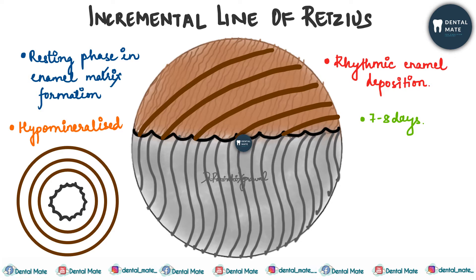Regarding ultrastructure: in transverse section, these appear as concentric circles which represent the growth rings of a tree. Whereas in longitudinal section — as shown here — they appear as a series of brownish dark lines.